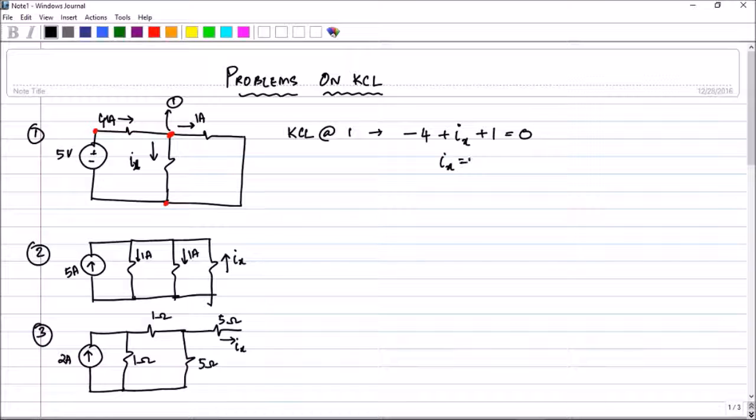So equal to 0. So Ix will be equal to 3 amperes. A straightforward question. A simple question. Now, let us go for the next question here.